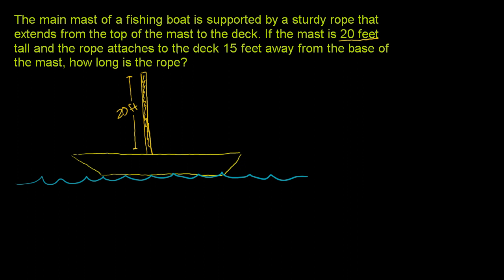And then they say a rope attaches to the deck 15 feet away from the base of the mast. So this is the base of the mast. This is the deck right here. The rope attaches 15 feet away from the base of the mast. So the rope might attach, so if this is the base of the mast, we go 15 feet, might be about that distance right there. Let me mark that. This distance right there is 15 feet. And the rope attaches right here, from the top of the mast all the way to that base. So the rope goes like that.